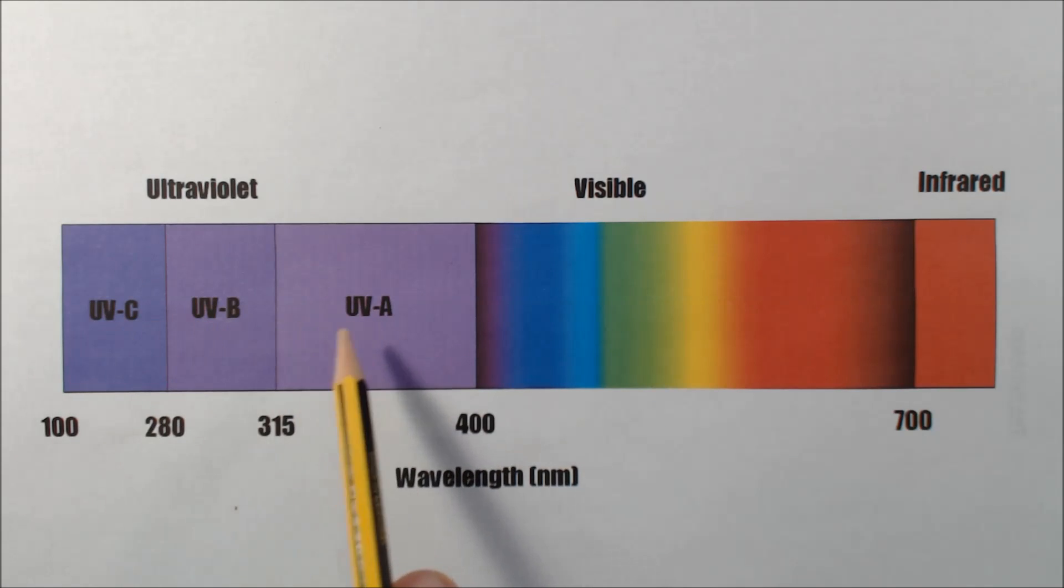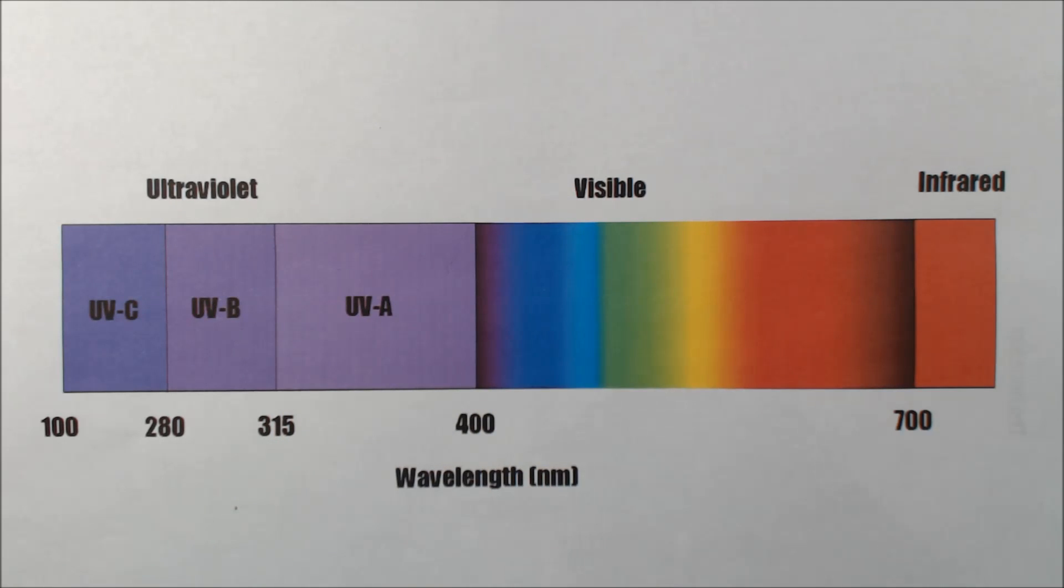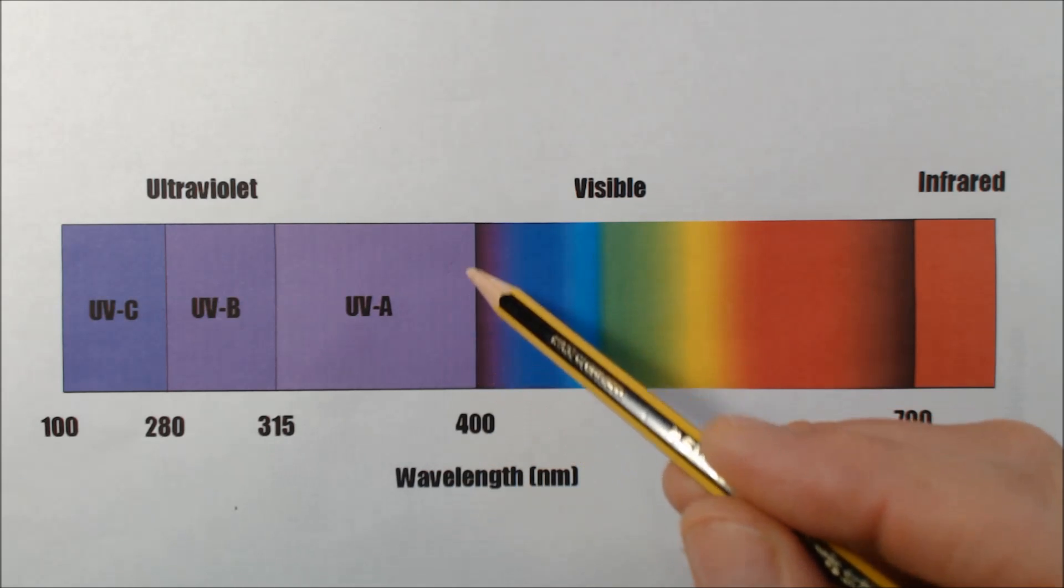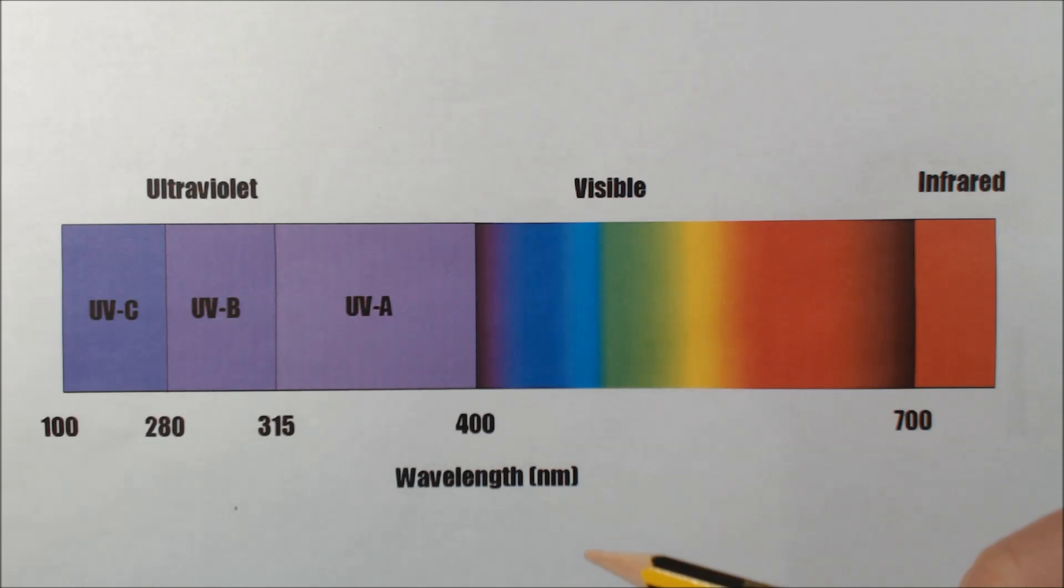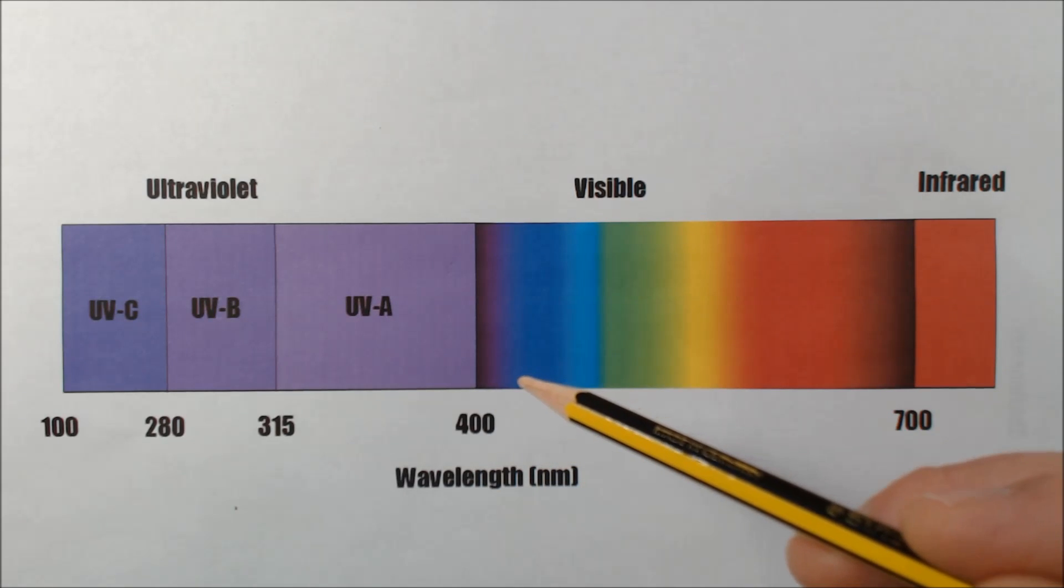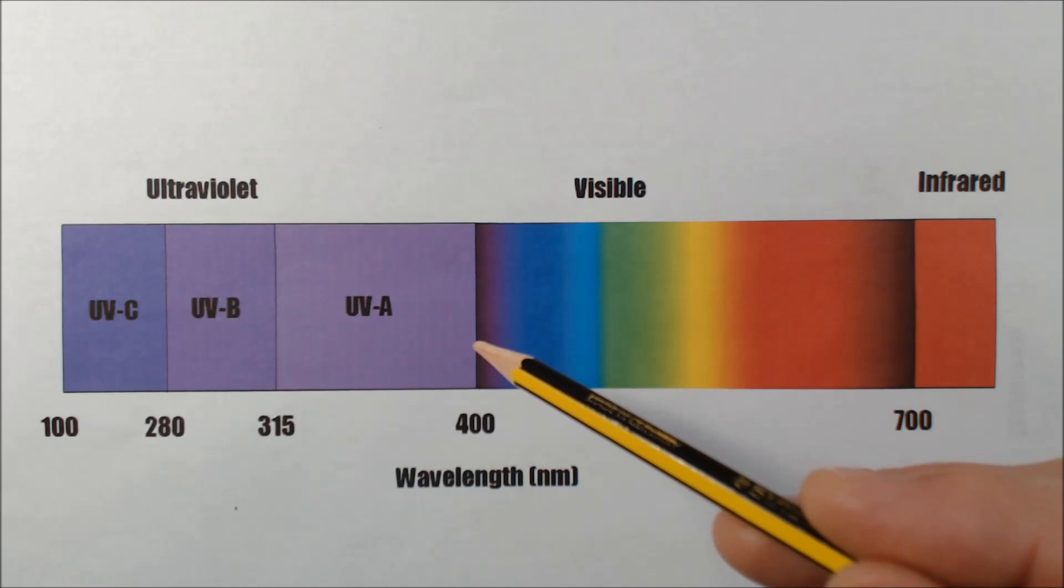The ultraviolet spectrum is split into different sections. You've got the UVC at the short wave end of the spectrum, UVB in the middle and UVA at the long wave end of the spectrum. The UV LEDs that I'm looking at all operate in the UVA part of the spectrum. So the UVA part of the spectrum operates from 315 to 400 nanometers and 400 nanometers is where it borders the visible part of the spectrum and you'll see at that point you've got violet and that's where you'll see a lot of the LEDs that are advertised as UV stroke purple or UV stroke violet.